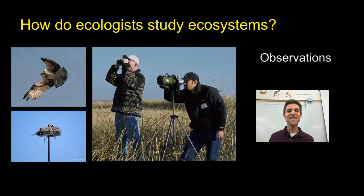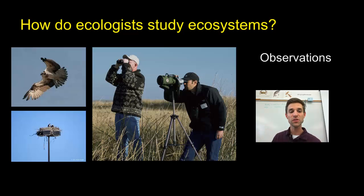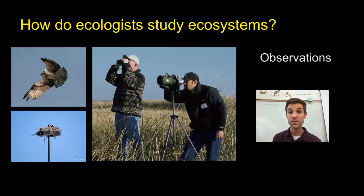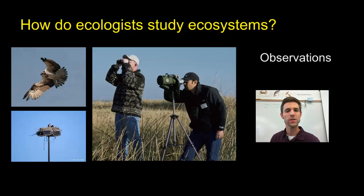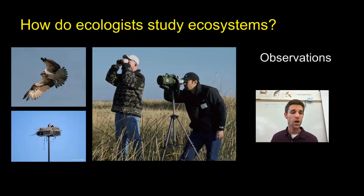So how do ecologists study ecosystems? It's a terribly complex thing to do, but most often they start with observations. These scientists in the field are watching something — maybe an osprey nest — with monocular and binocular scopes, trying to gather data. How many chicks are in the nest? Are both parents coming and going carrying food or nest materials? How often are the parents flying to and from the nest, or how long do they spend away? So answering questions and gathering data through observation.